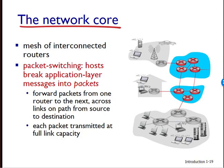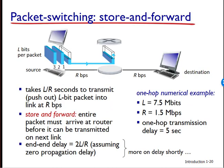Packets move across the link at full transmission speed based on the characteristics of the medium used. A link using twisted pair wiring will have a different transmission speed than a link using optical fiber, as we discussed in the previous lesson. Most packets use what is referred to as store-and-forward transmission at the inputs to links. Store-and-forward transmission means that the packet switch must receive the entire packet before it can begin to transmit the first bit onto the outbound link.